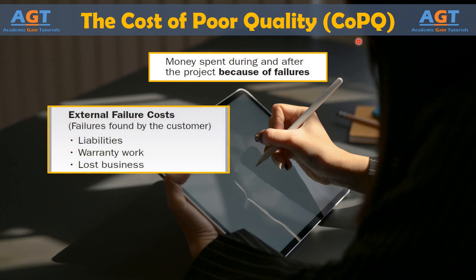External failures usually occur after products or services have been delivered, which means they are directly associated with customer dissatisfaction. External failures might include revenue losses associated with a reduction in sales because of the quality of products, services, systems, or information. Other types of external losses include expenses associated with repairs, returns, or rework associated with a customer complaint, expenses associated with warranties, or loss of revenue or sales because of customer ill will or bad word of mouth.